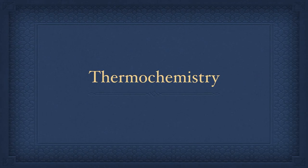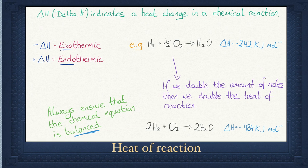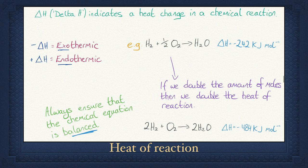Thermochemistry is the maths part of this chapter. It essentially comes down to two reactions that involve heat change. Exothermic is the release of heat, whereas endothermic is the taking in of heat — i.e., the surroundings get cooler. Delta H is the symbol used to indicate if there is a heat change in a chemical reaction. If the delta H is negative, it is exothermic — it releases heat and the surroundings get warmer. Whereas if the delta H is positive, it is endothermic — it takes in heat and the surroundings get cooler. For example, the production of water is exothermic and has a delta H value of −242 kJ/mol. Later on you will be doing calculations that will help you determine the delta H value. If we double the amount of moles, then we double the heat of reaction too.